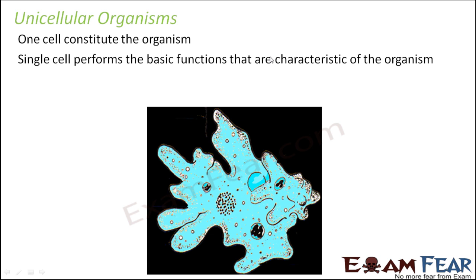One such example is amoeba. Amoeba is shapeless — it does not have a specific shape. It is a microorganism, very small in size. They are generally found in marine regions where there is water, for example the decaying bottom vegetation of freshwater lakes or ponds. Amoeba is one such unicellular organism, and this entire organism is nothing but one cell, which manages to do everything.